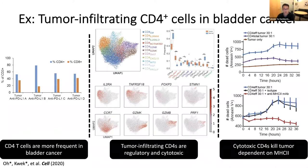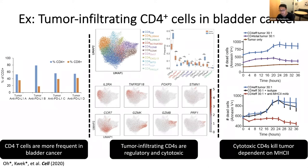We were curious about the role of CD4 T cells in bladder cancer. We performed single cell RNA sequencing of the CD4s and CD8s and to our surprise found a number of really interesting states in these CD4-positive T cells. It's been known that CD4 T cells in tissue can have immune-suppressive function — regulatory T cells are common, and we see those tagged by FOXP3 on the left — but what was really surprising were two populations of cytotoxic CD4s in purple and brown.